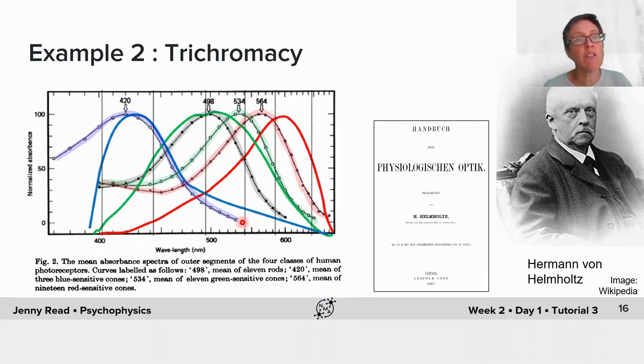They hadn't yet discovered that they were in fact different cone types within the retina. This is a really nice example of how psychophysics was able to make powerful predictions that were subsequently borne out by physiology.